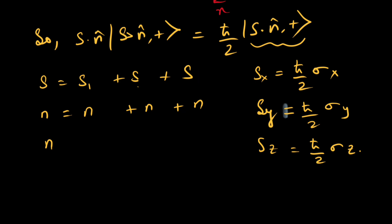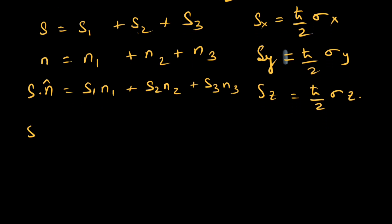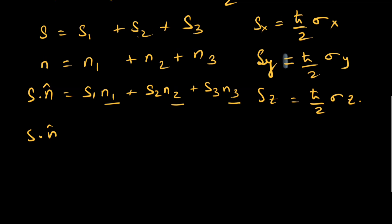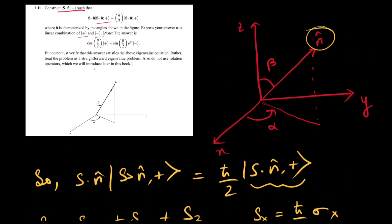So we have S1, S2, S3 and n1, n2, n3. Then s·n̂ would just be S1·n1 + S2·n2 + S3·n3. Now we have to find the individual values of n1, n2, and n3, which we can figure out from the diagram.